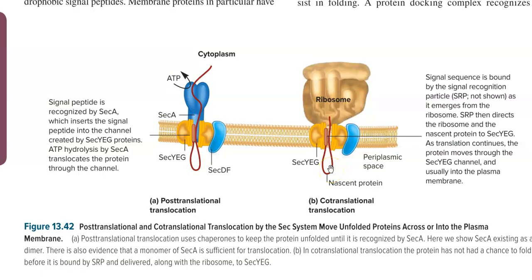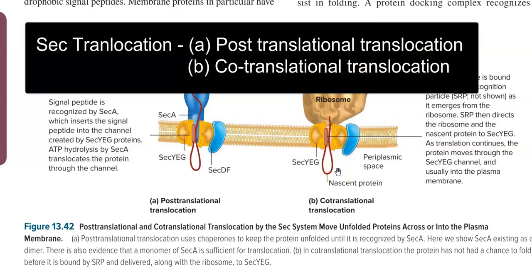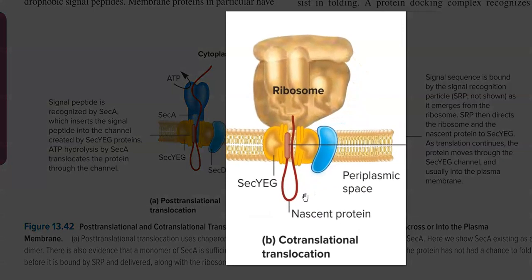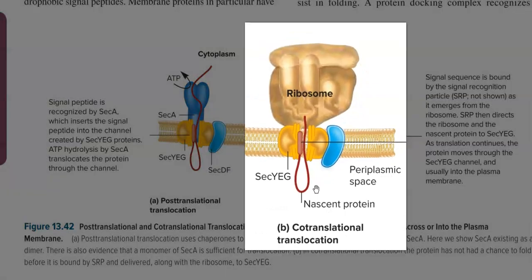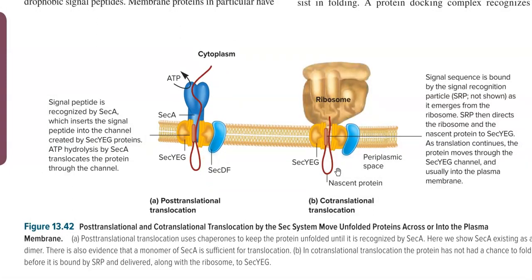We now understand how protein translocation happens through the interaction of the signal peptide or signal sequence with the signal recognition particle. Protein translocation in the cell is of two types: one is co-translational translocation and the other is post-translational translocation. Co-translational translocation means that translocation is happening simultaneously with the translation process.